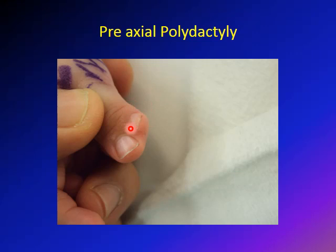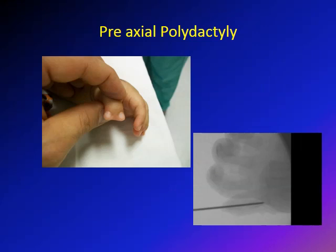In most cases, the more radial digit is excised and the ligaments are reconstructed to ensure the remaining thumb is functional. Here is a case of pre-axial polydactyly where the extra digit is more radial and much less developed than the other. In this case the extra digit is rudimentary, so only simple ligament reconstruction is needed. In another example, the extra digit is more developed, requiring more advanced reconstruction.